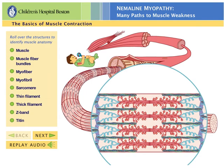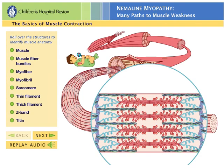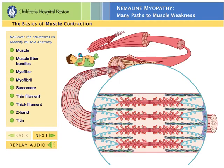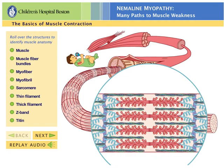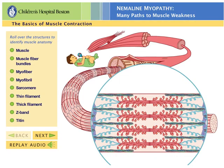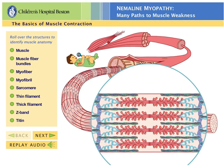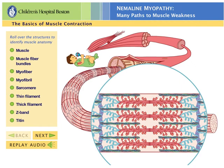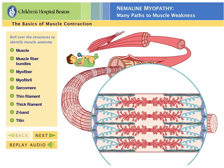Nemaline myopathy is a rare genetic disease that results in variable degrees of muscle weakness. Working with colleagues from around the world, we have discovered that nemaline myopathy can be caused by mutations in any one of at least six different genes.